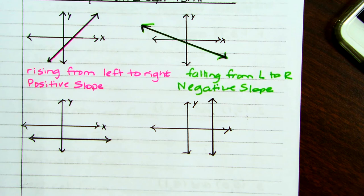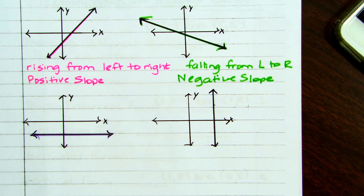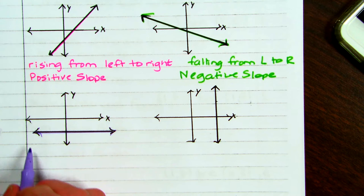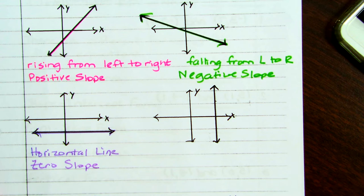In the third graph, you have a horizontal line — we'd think of that as a great road or a perfect floor. That's what we want our floors to look like in a house: a nice horizontal line. This is considered to have a zero slope; it does not rise nor fall left to right.